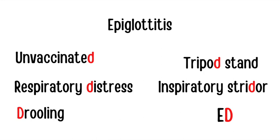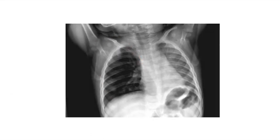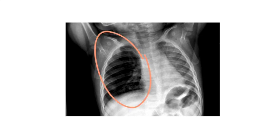Foreign body aspiration should always be considered in a pediatric patient with sudden onset of unexplained symptoms such as shortness of breath or coughing. On the left, the foreign body is possibly a coin, but most objects are radiolucent. More than 50% of aspirated foreign bodies lodge in the right main stem bronchus. X-ray findings may show ipsilateral hyperinflation, diaphragm flattening, or a mediastinal shift.